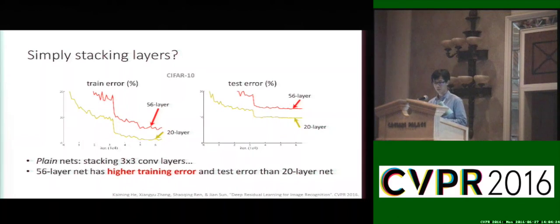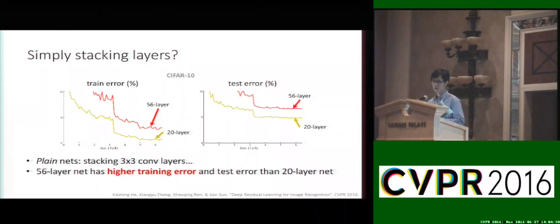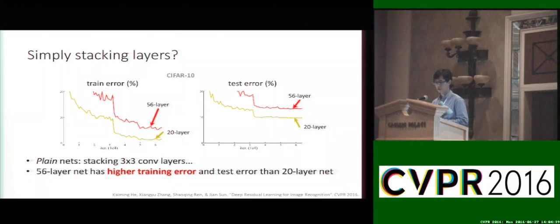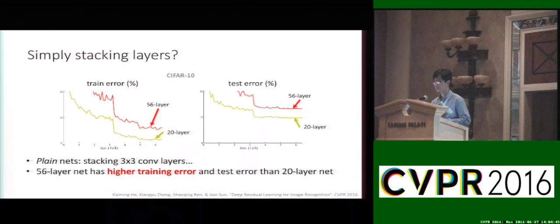Here are some results of the plain network, which simply stacks 3×3 convolutional layers, on the CIFAR-10 dataset. The x-axis is the number of training iterations and the y-axis is the error rate. The yellow lines are the results of a shallower 20-layer network and the red line is the 50-layer deeper counterpart. Surprisingly, the training error is higher for the deeper model, and the testing error is higher as well.